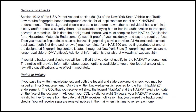Background checks: Section 1012 of the USA Patriot Act and Section 5016 of the New York State Vehicle and Traffic Law require fingerprint-based background checks for all applicants for the H and X hazmat endorsement. The background checks are done to determine whether an individual has a criminal history and/or possesses a security threat that warrants denying authorization to transport hazardous material. To initiate the background checks, you must complete Form HAS-44, Application for Hazardous Material Endorsement, submit proof of your residency, and pay the required fees. Then you must be fingerprinted at an authorized fingerprinting service provider.